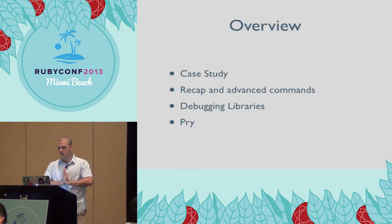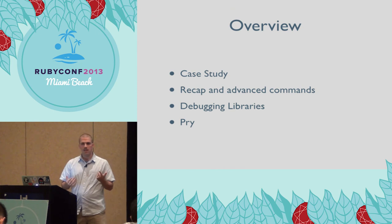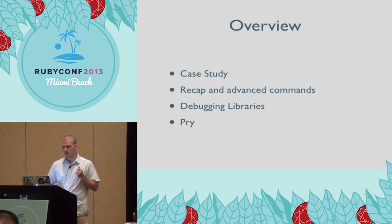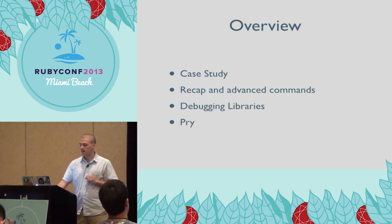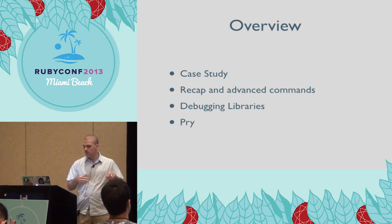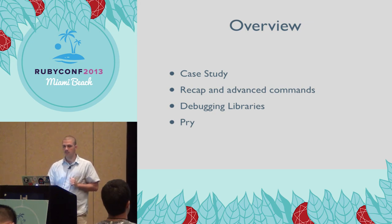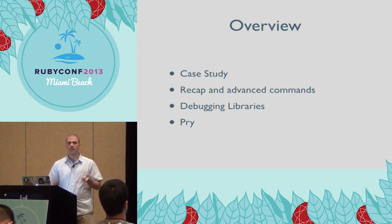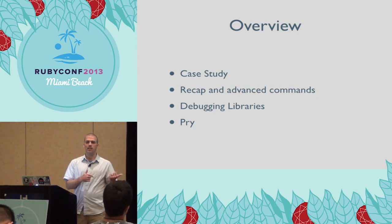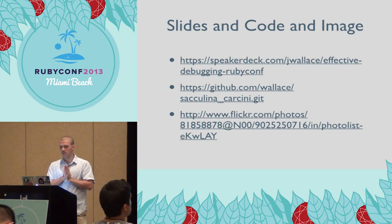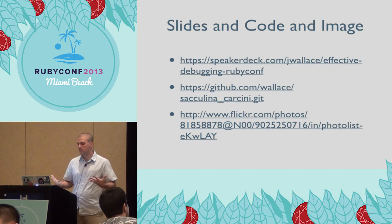To recap: we looked at a case study and covered basic commands — next, step, break, continue, and display. We looked at advanced commands not available everywhere but available in Byebug: finish, source, and save. If you're using Ruby 1.8.7, use ruby-debug. If you're using 1.9, use debugger. If you're using 2.0, use Byebug. If you're using Pry, you can combine it with both, and I'd also recommend pry-plus. My slides are available on Speaker Deck.